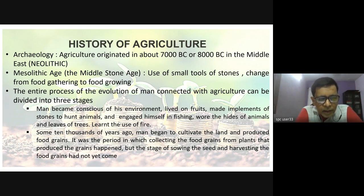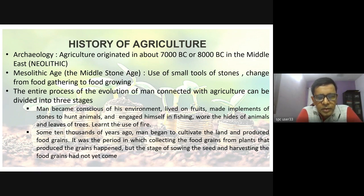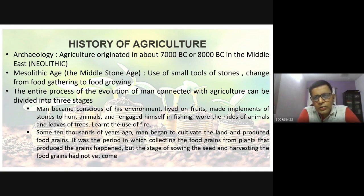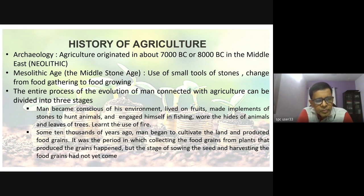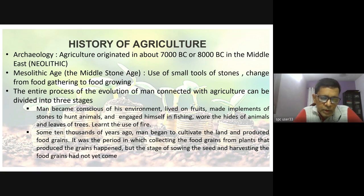In the Mesolithic age — the middle stone age — we find that human beings were using small tools of stones. There was a slight change: not everybody, but there was a slight change of human beings moving from food gathering to food growing. It all started in the Mesolithic.